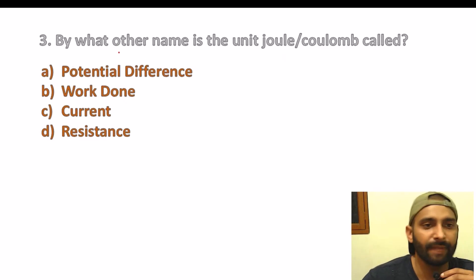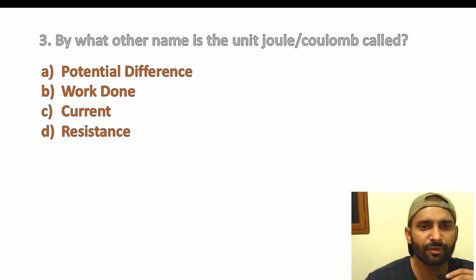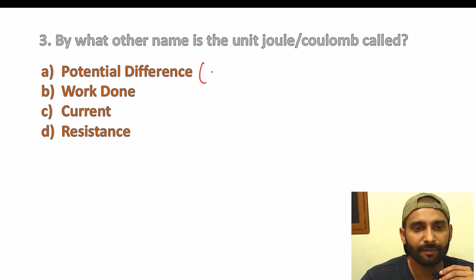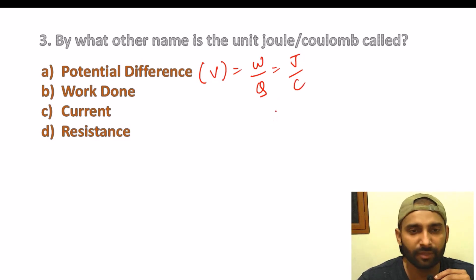Next question: by what other name is the unit Joule per Coulomb called? You already know that potential difference V equals work upon Q. Work done is in Joules and charge is in Coulombs, so Joule per Coulomb is the unit. Students, please mention your answers in the comment section.